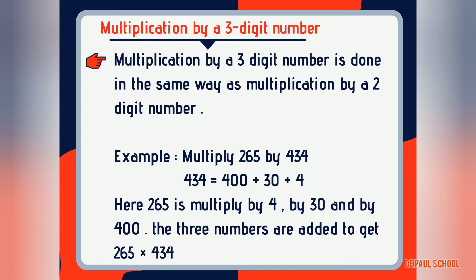The multiplicand 265 is first multiplied by 4. In the second row it is multiplied by 30, and then multiplied by 400 in the last row. All three rows are then added together to get the final answer.